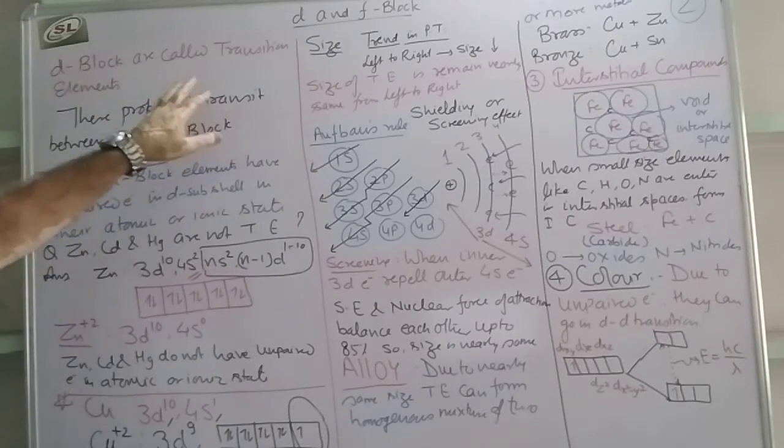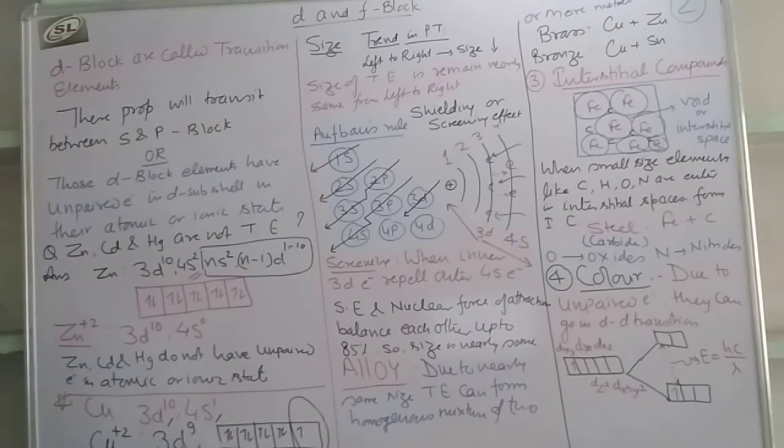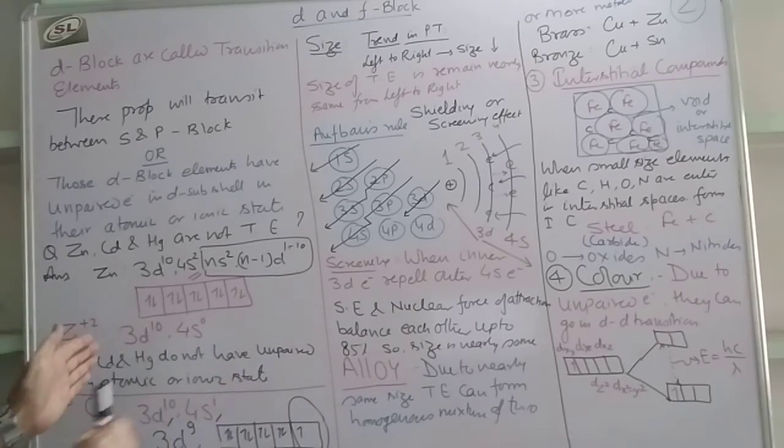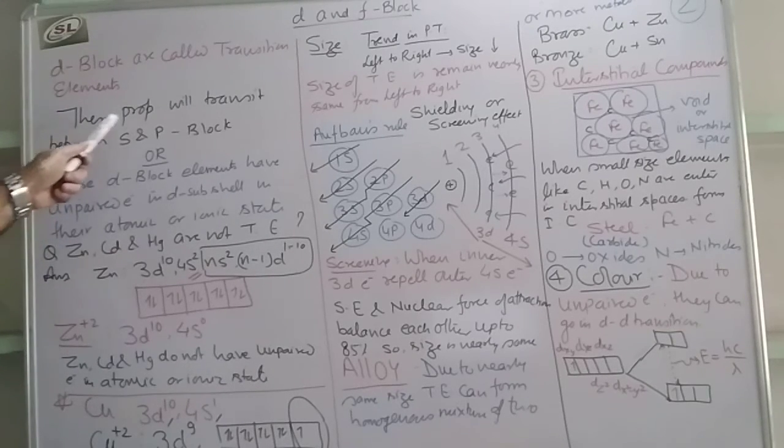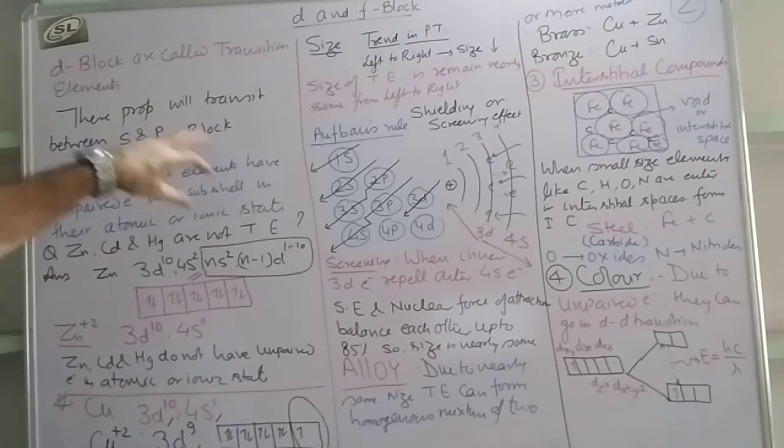Now, why are the D block elements called transition elements? D block elements are called so because the last electron enters D sub-shells. Why are they called transition elements? Because their properties will transit between the S and P block. For example, S block elements are big in size in a period, left to right when we go. And the P block elements are smallest in size, except noble gases. In between are the D block elements, whose size is neither too small nor too large, but medium. So all the properties of the transition elements transit between S and P block.